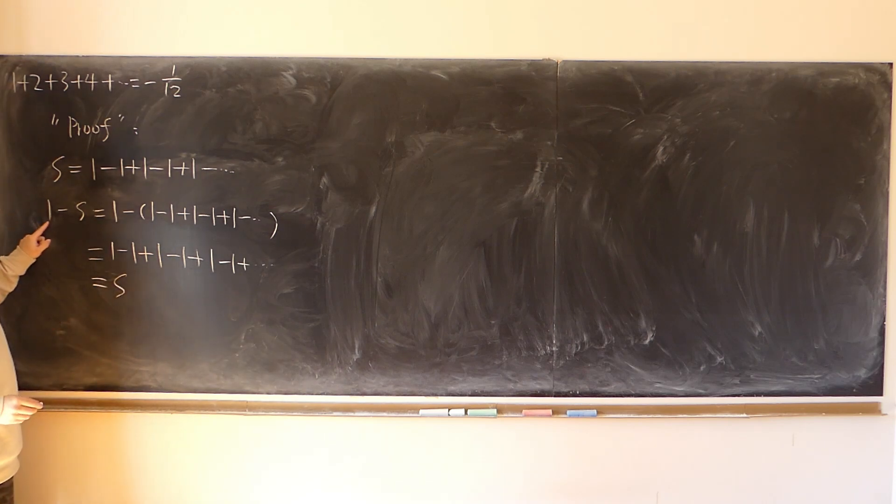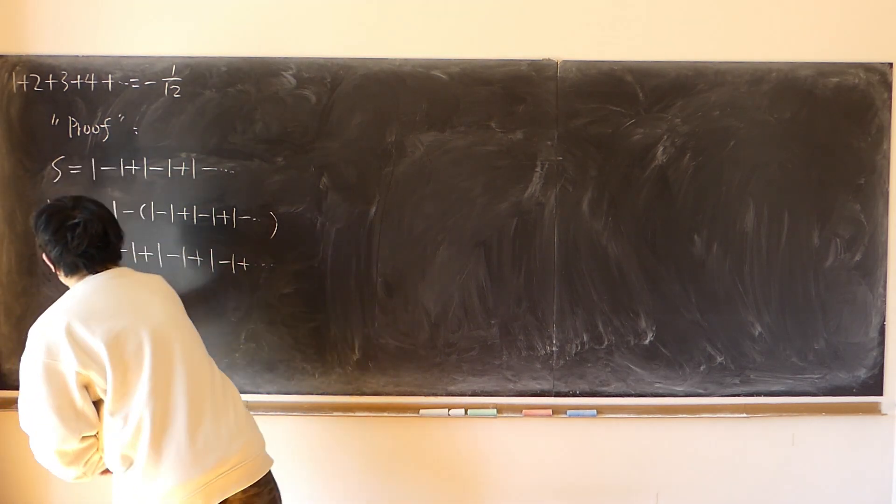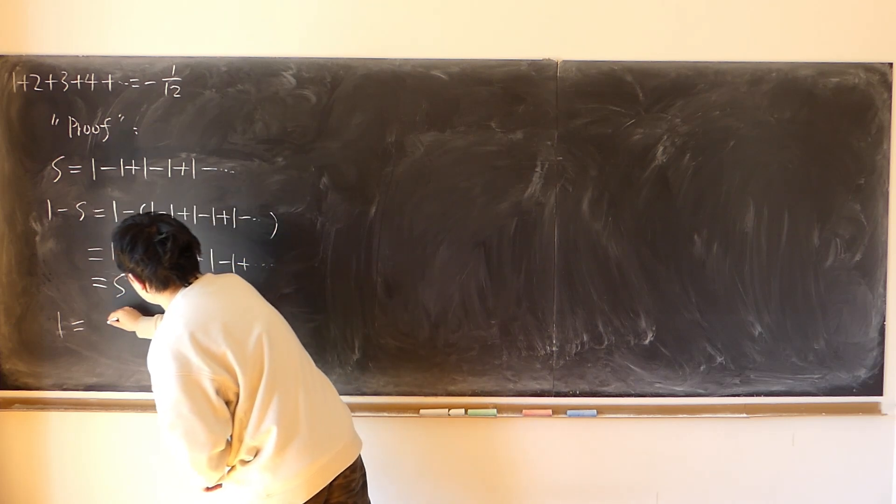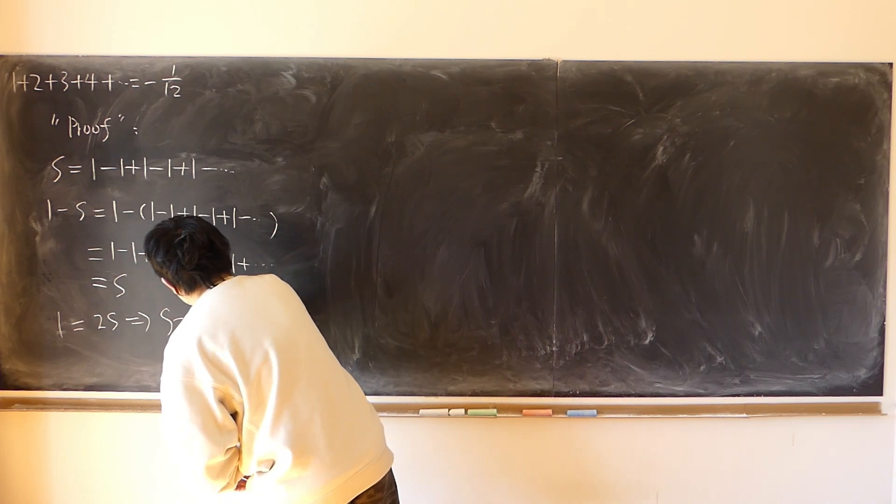So which means 1 minus s, earlier, 1 minus s is equal to s. So therefore, 1 is equal to this minus s moved to this side, so 2s. So s is equal to 1 over 2.